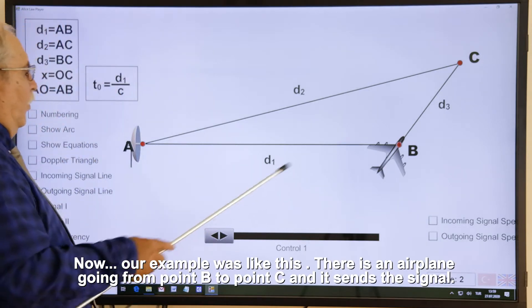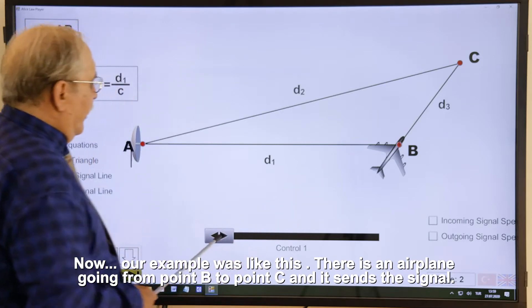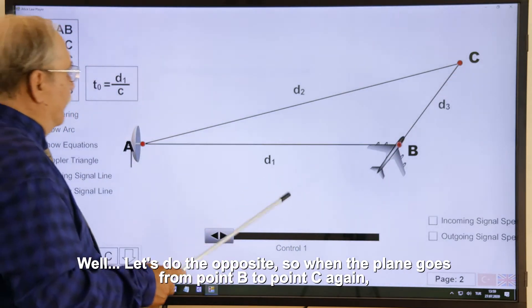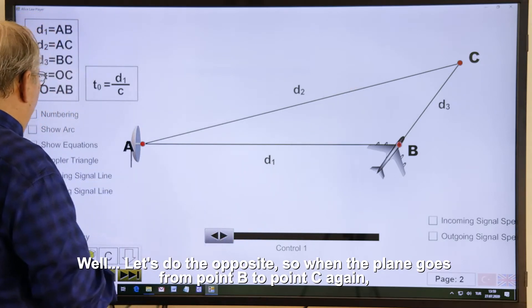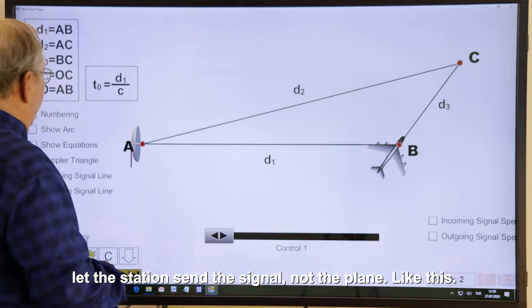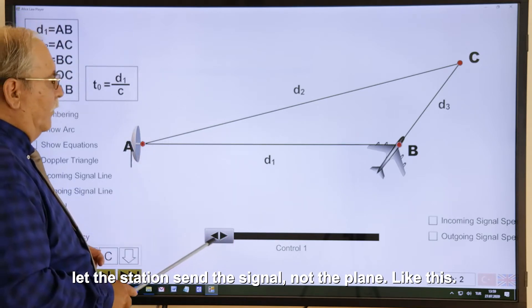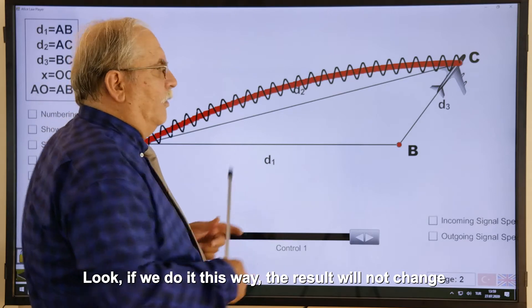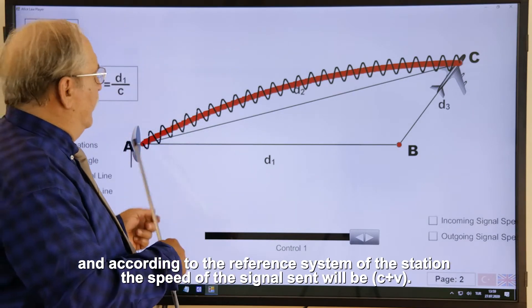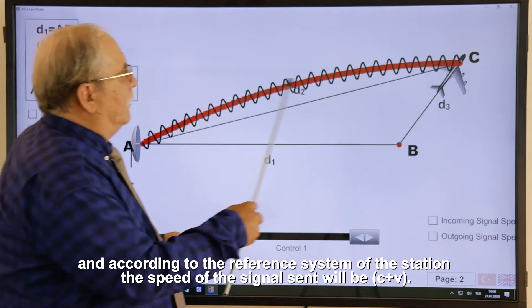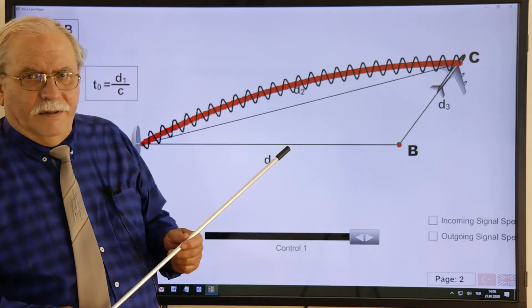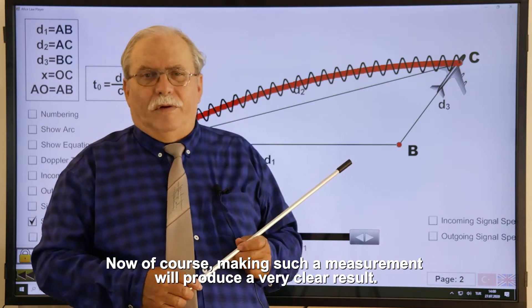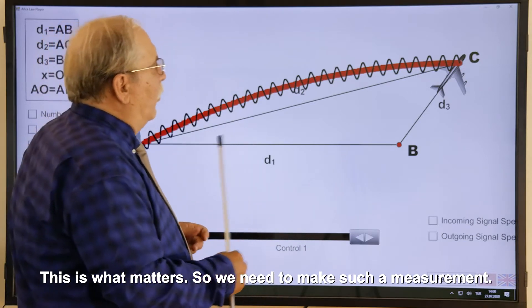Now, our example was like this. There is an airplane going from point B to point C, and it sends the signal. Well, let's do the opposite. So when the plane goes from point B to point C again, let the station send the signal, not the plane. Like this. Look, if we do it this way, the result will not change. And according to the reference system of the station, the speed of the signal sent will be C plus V. Now, of course, making such a measurement will produce a very clear result. This is what matters. So we need to make such a measurement.